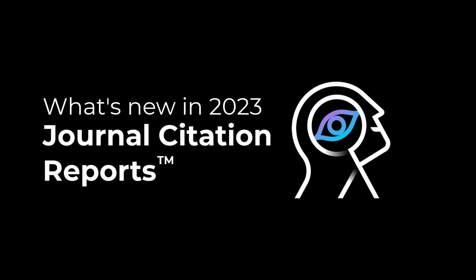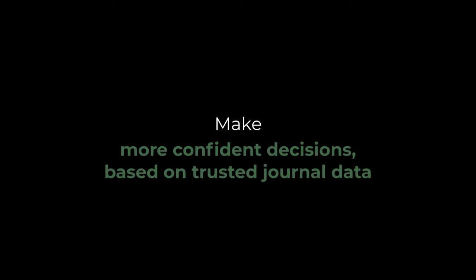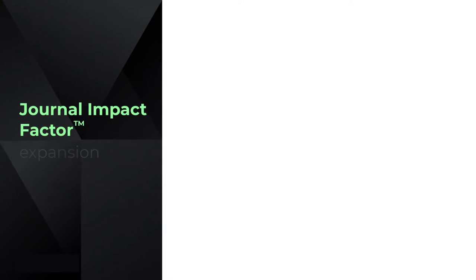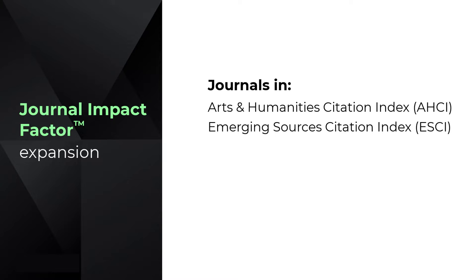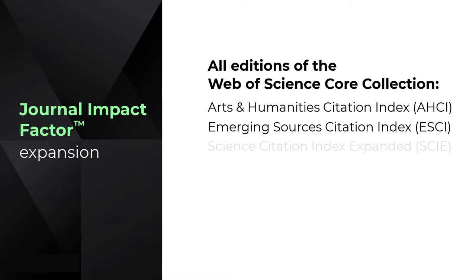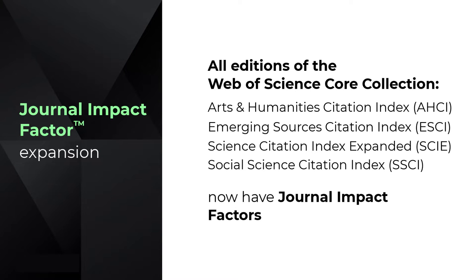The 2023 Journal Citation Reports is here, and we've made some changes to help you make more confident decisions based on trusted journal data. Journals in the Arts and Humanities Citation Index and the Emerging Sources Citation Index will receive journal impact factors for the very first time this year. This means that now, journals in all editions of the Web of Science Core Collection will have a journal impact factor, ensuring more complete journal profiles across all areas of research.